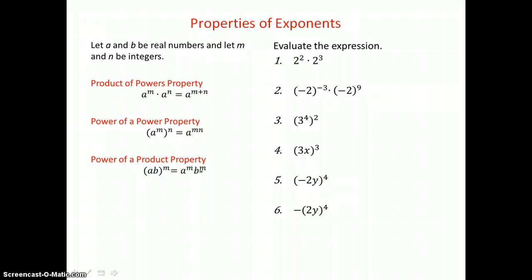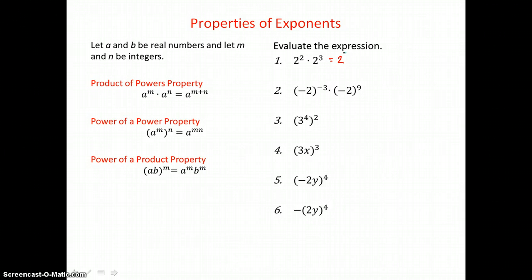In our first example, we're multiplying like bases. When we multiply like bases, all we have to do is add those exponents. So it's 2 to the 2 plus 3 power, which is 2 to the 5th power.